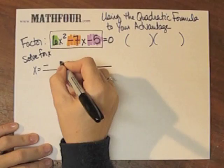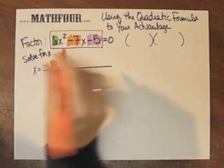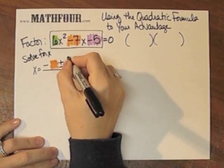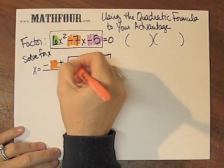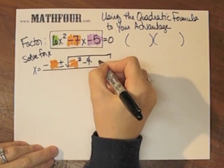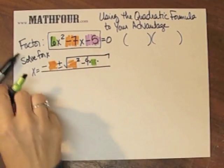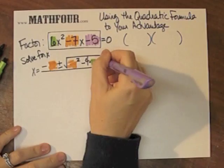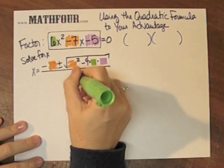So, negative b, which is my orange, plus or minus the square root of b squared, which is orange, squared minus 4 times a, green, and c, purple, all over 2 times a, green.